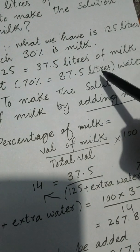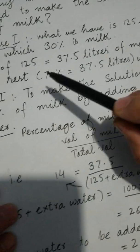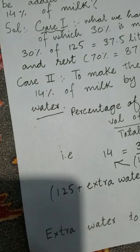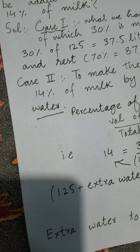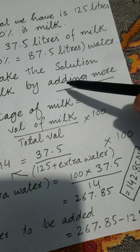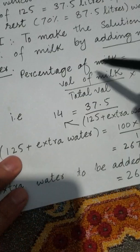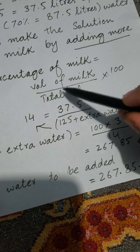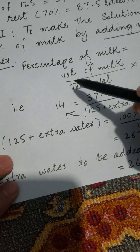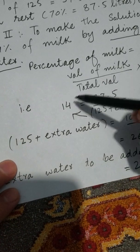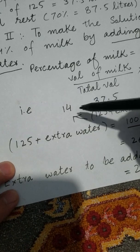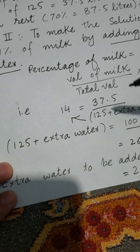Now we have to make the percentage of milk 14%. The percentage of milk is the volume of milk divided by total volume, multiplied by 100. This is the percentage of milk.